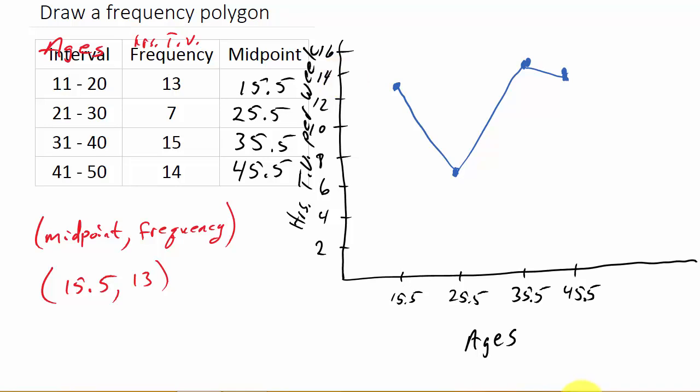But also what we do with the frequency polygon is you can see here how it starts with 15.5. Well, if we were coming back this way, what would be the next midpoint? Okay. You can see the difference in these are tens. So if we add 10 to this, we get this 25.5. We add 10 to 25.5, we get 35.5. Well, if we subtract 10, we would get 5.5. And if we add 10 to the last one, that would give us 55.5.